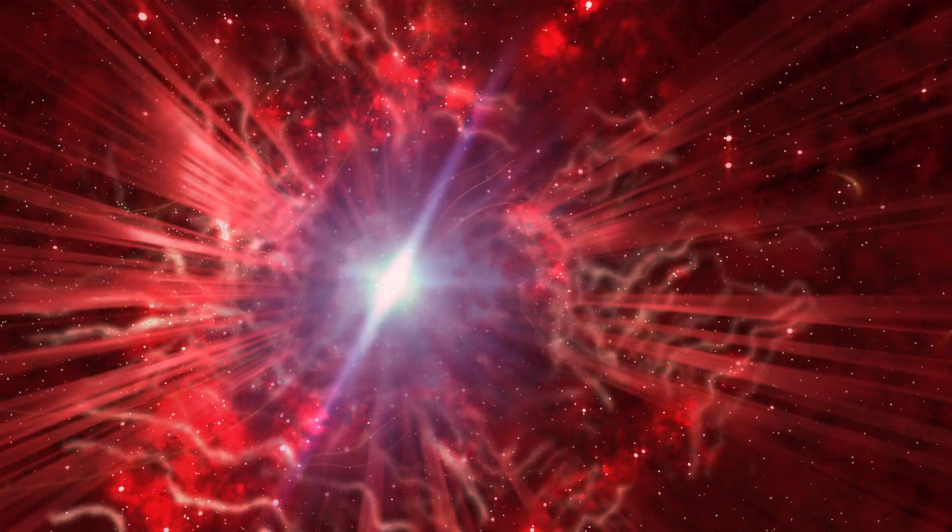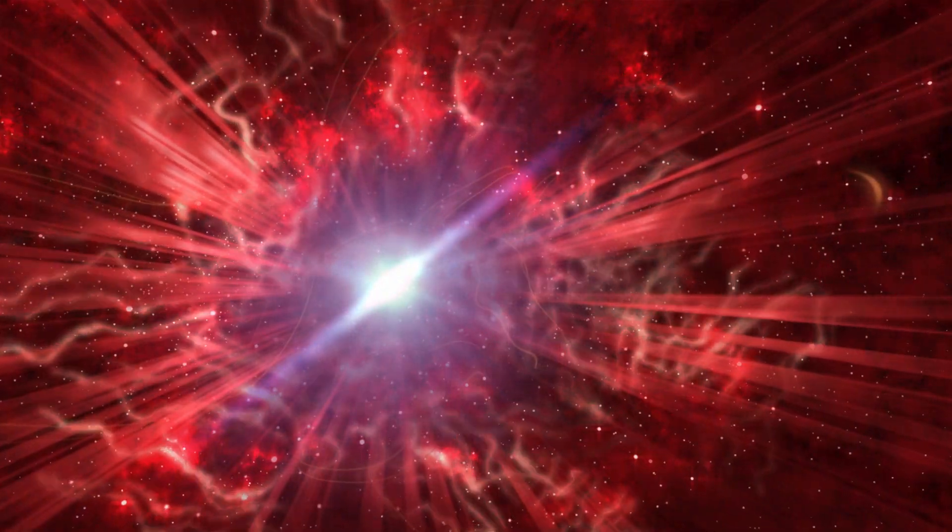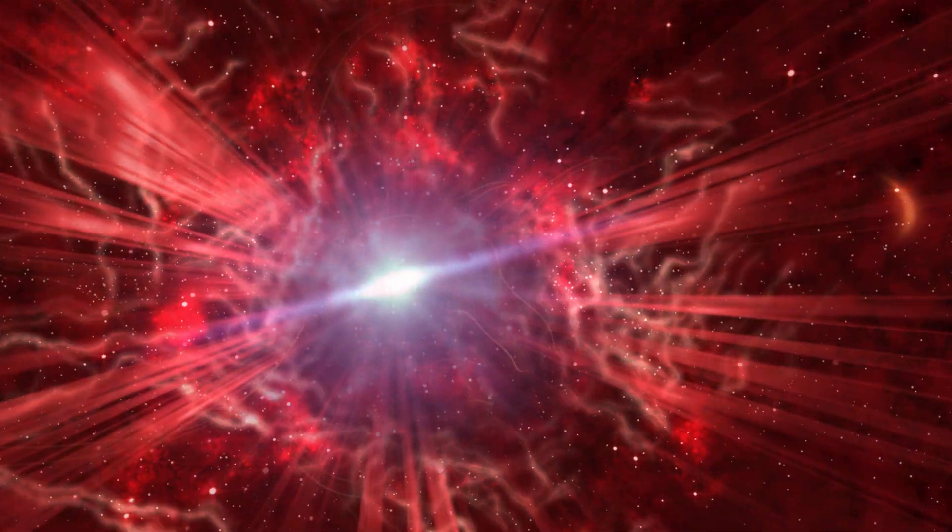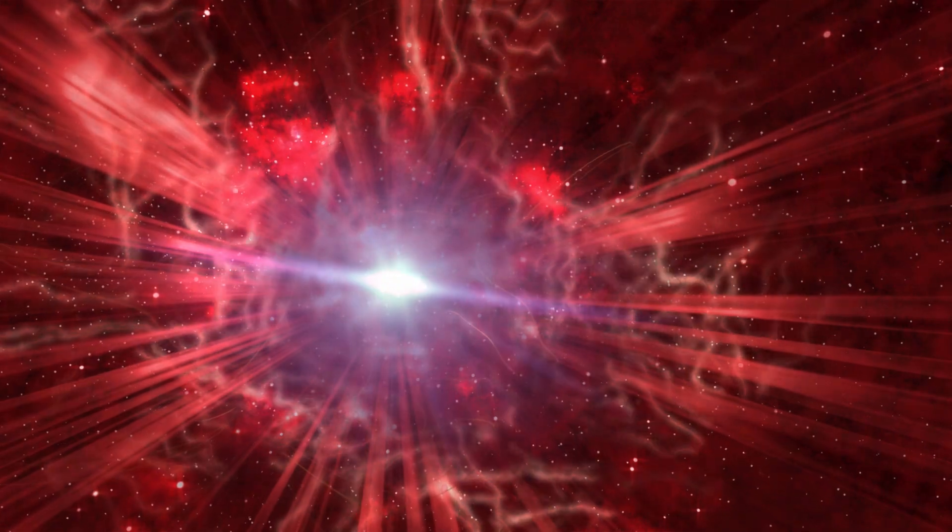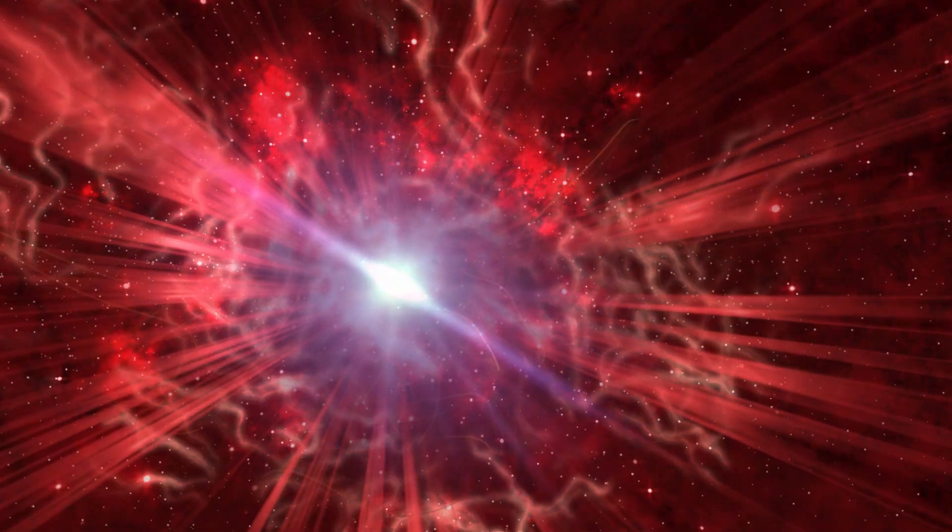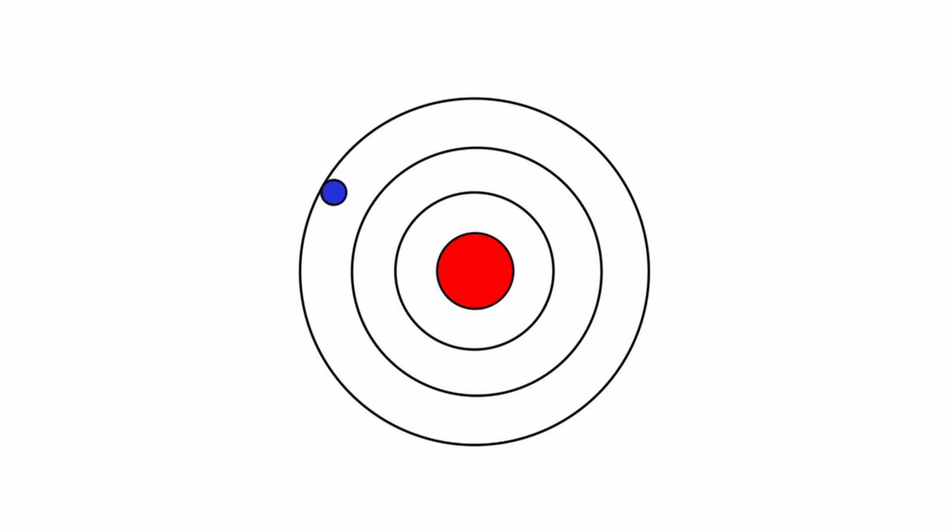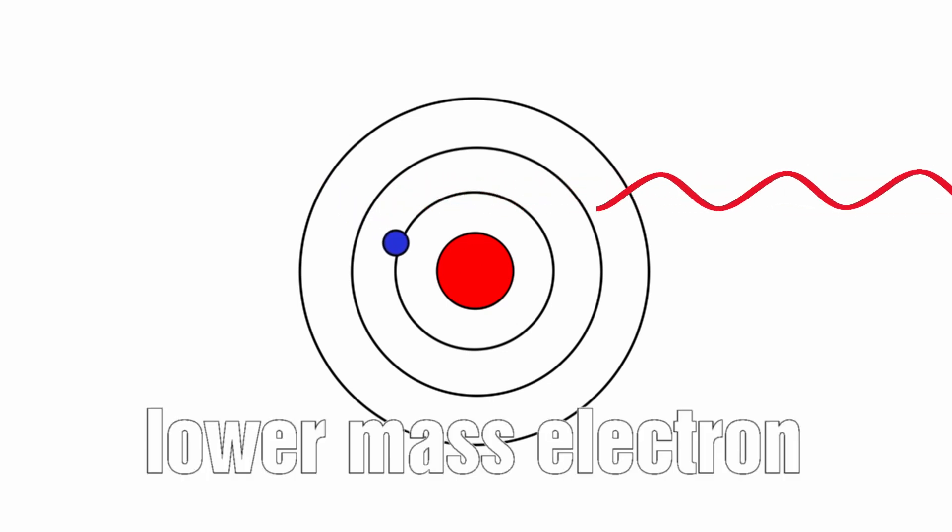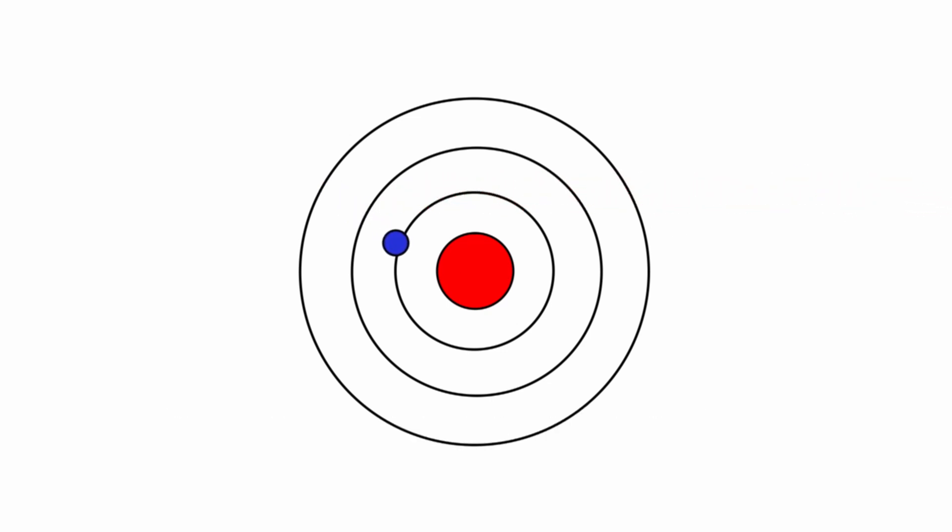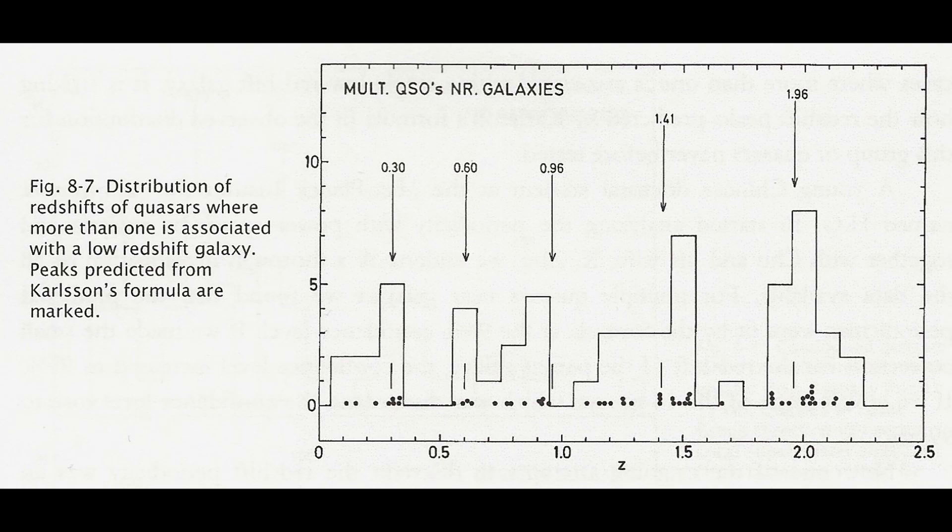Now explaining the quantization of this redshift using plasma redshift is a little bit harder to do and it is something that we will be exploring in a lot more detail very shortly. ARP thought that the mass of the electrons was changing as the objects were being ejected and evolving over time, and that this increased in quantized steps causing what we see as the quantization of the redshift today.